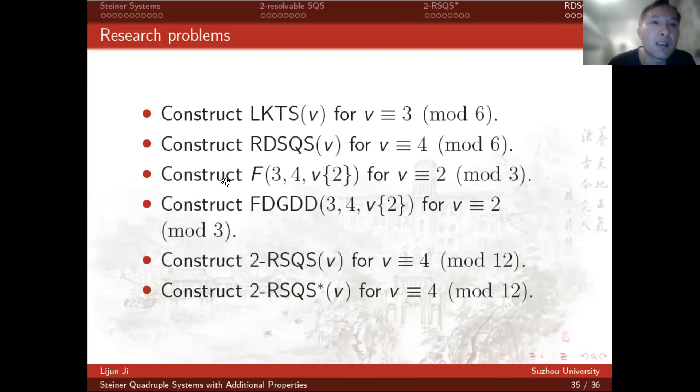We list a few research problems. Construct LKTS(v) for v equals 3 modulo 6. Construct RDSQS(v) for v equals 4 modulo 6. Construct frames for v equals 2 modulo 3. Construct FD-GDD(3, 4, v) for v equals 2 modulo 3. Construct 2-resolvable SQS and construct 2-resolvable SQS with star. They are harder to construct. More constructions are needed. That's all, thank you.